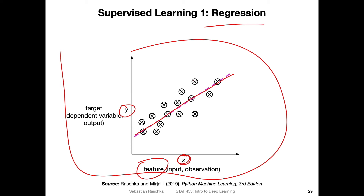We are fitting a linear model. If we have a new observation, we can predict what its target value might be given this model. Think of the x's as the training data. If I have a new data point and I only know the x value, to predict the y value I go up to the line and look up the y value. Using this linear model I can make predictions for new data points not in my dataset — that is one example of a supervised learning problem.